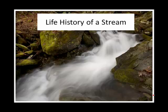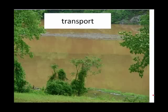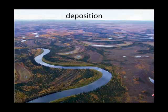Streams change the surface of the earth more than any other surface process. They do this by the processes of erosion, transporting that eroded material, and finally depositing it. The sediment deposited by a river is called alluvium.